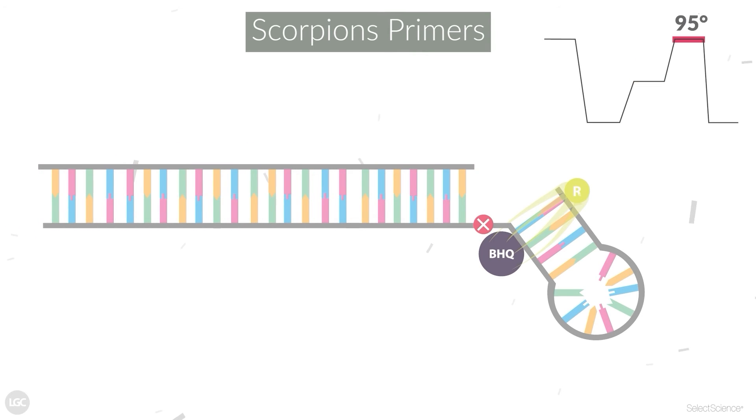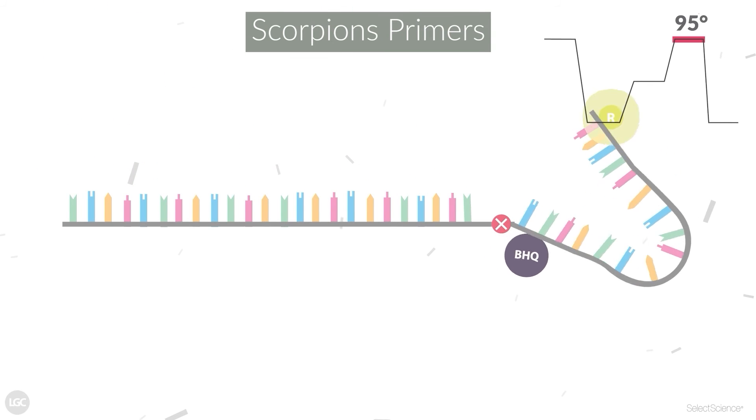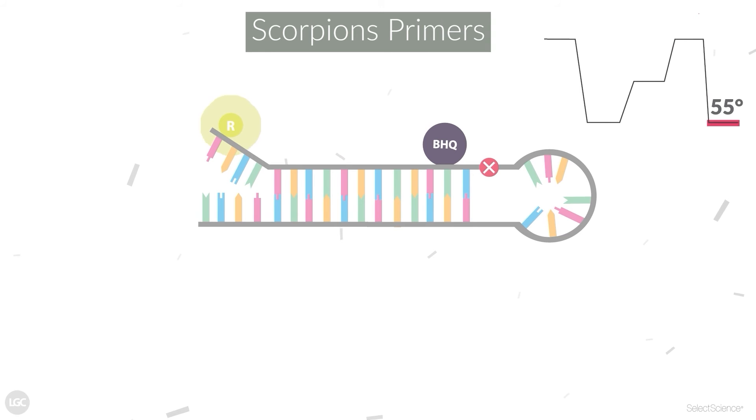The final step involves heating, which causes the Scorpion's primer to unfold, and then cooling, which allows the complementary probe sequence to anneal to the newly replicated strand.